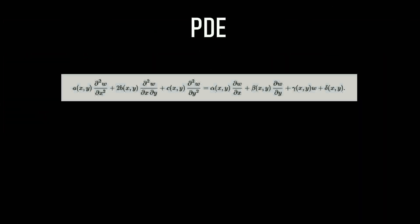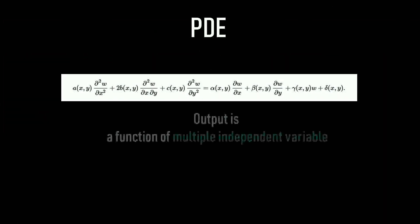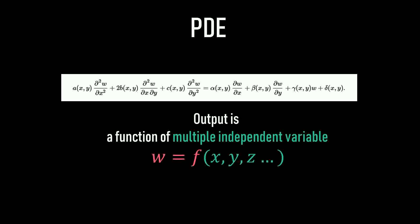For example, this is a PDE. The output of this complicated PDE is a function of multiple independent variables. For example, if the solution for this problem is w, then this w is a function of x, y, z, where x, y, z are the spatial coordinates in 3D.